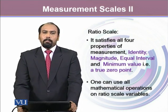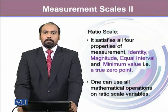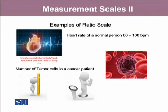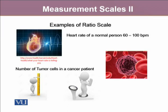Moreover, one can use all mathematical operations on a variable measured on a ratio scale. Examples include heart rate of a normal person, which is 60 to 100 beats per minute — having a heart rate of zero actually means that person is no more. Similarly, in the case of tumor cells in a cancer patient, when the number of tumor cells goes to zero, it means the person doesn't have a tumor, reflecting total absence. Likewise, height or weight of a person going to zero means the person is not there — it refers to total absence. All these variables are measured on a ratio scale.